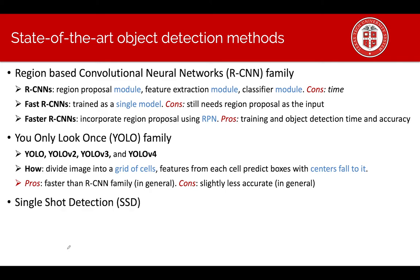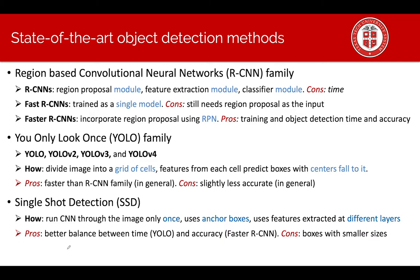Next type of detection method is single-shot detection. It runs CNN through the image only once and uses anchor boxes. It uses features extracted at different layers for predictions of boxes with different sizes. Its advantage is better balance between time and accuracy but still has issues with smaller boxes.